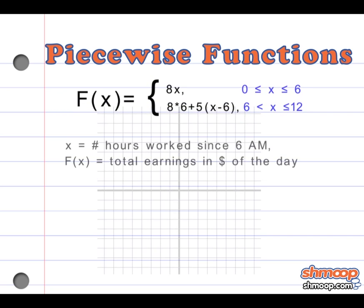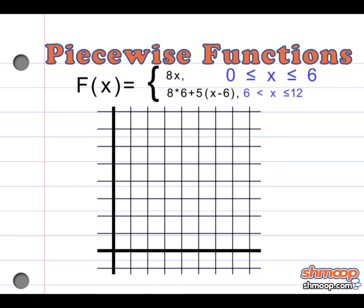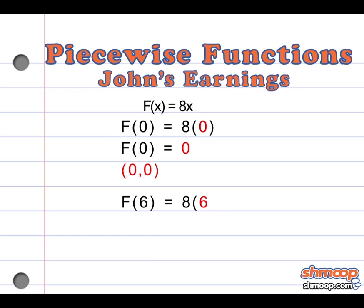Now everything can be shown on one chart — all we do is graph the function. Both pieces are line segments, so two points per piece are sufficient to graph the function. For the first line segment, when x is greater than or equal to 0 and less than or equal to 6, we can plug in x as 0 to get the point (0, 0) as one endpoint. To get the other endpoint, we plug in x as 6 to get (6, 48).